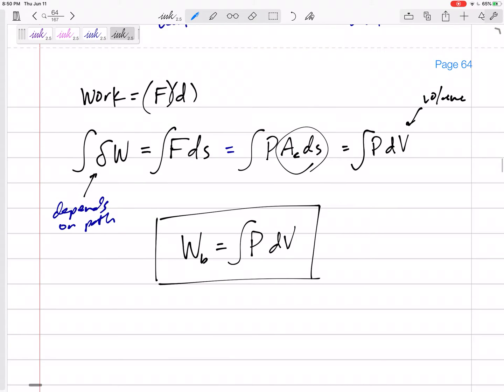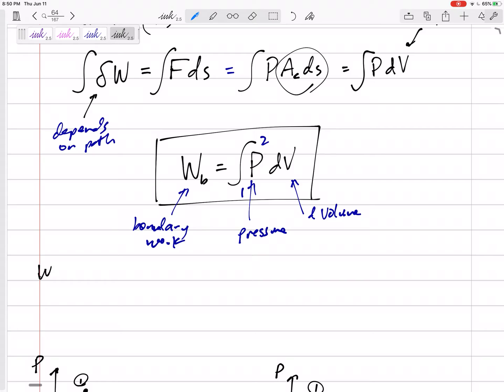Work is the integral of P dV. Work is the boundary work. Work is the integral of pressure times dV, this differential volume, from 1 to 2. Let's write that in words. Boundary work is the integral of the pressure with respect to, or integrating it with respect to volume, from point 1 to point 2.